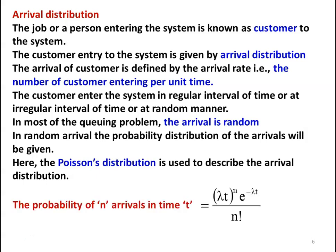The probability of n arrivals at time t is given by: P = (λt)^n · e^(−λt) / n!, where n is the number of customers, t is the time, and λ is the mean arrival rate. The mean arrival rate is calculated from previous customer arrival data.